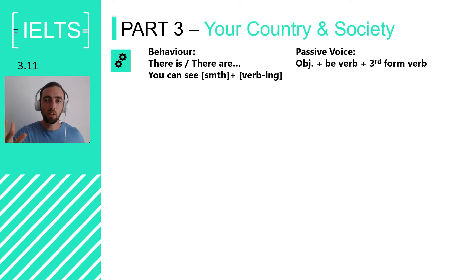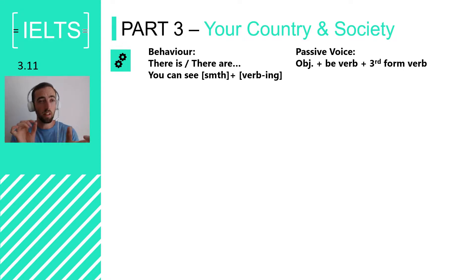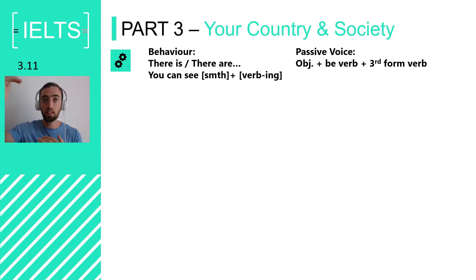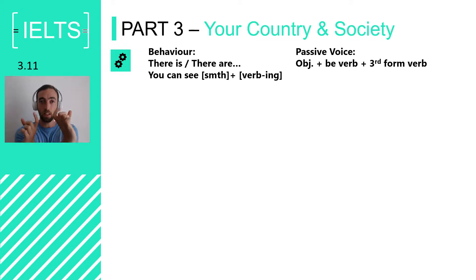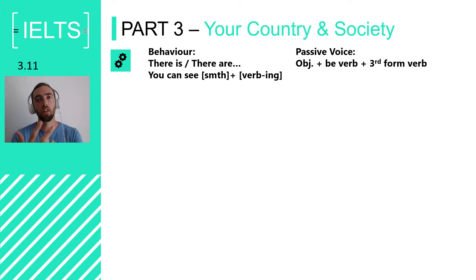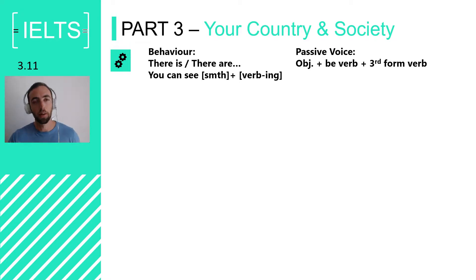Another thing you can do is use the passive voice. The passive voice is quite advanced grammar — it's a little bit less common, so it gives you quite a high band score when you use it correctly. This is a great opportunity to use the passive voice. Passive voice has the object first, the 'be' verb, and then the third form — past participle — of the verb. Let me show you how you can use this.